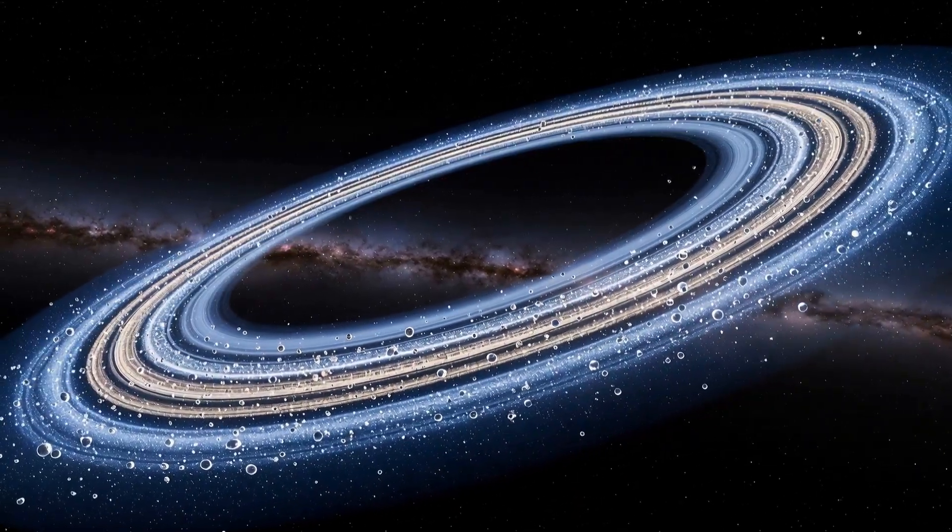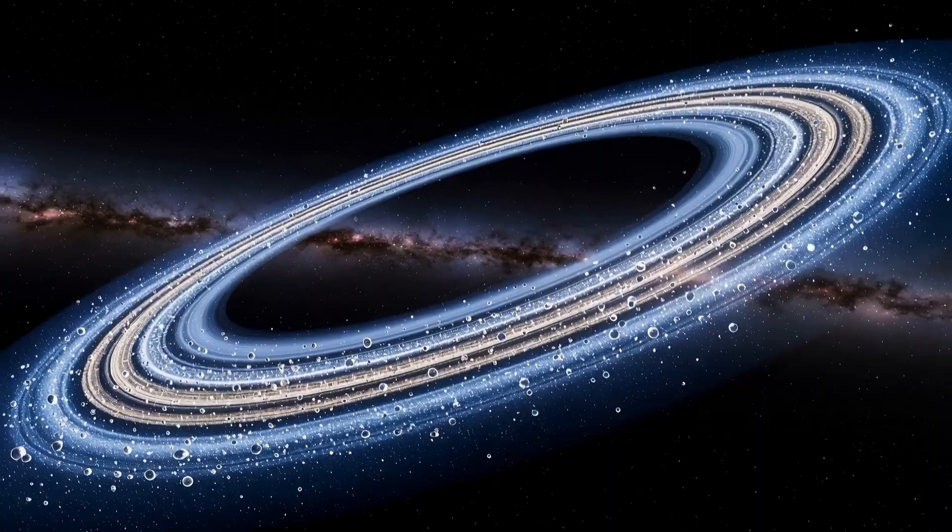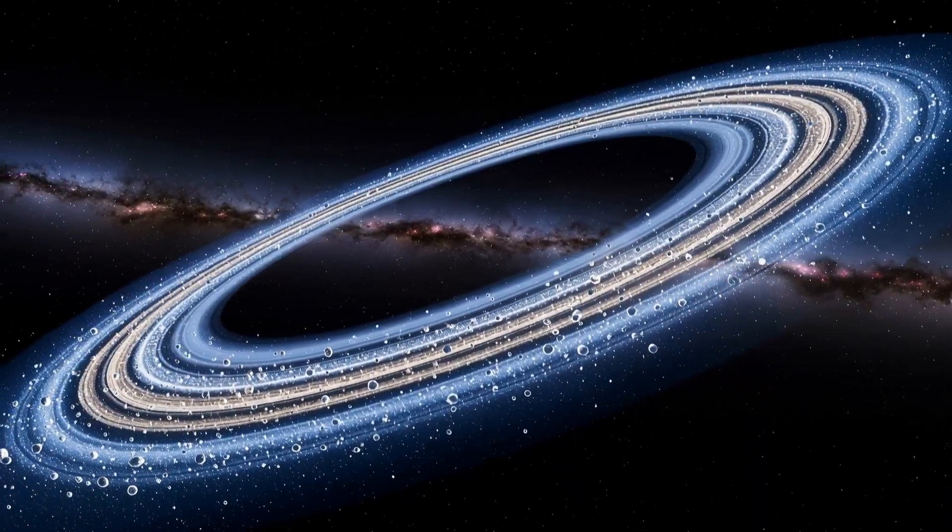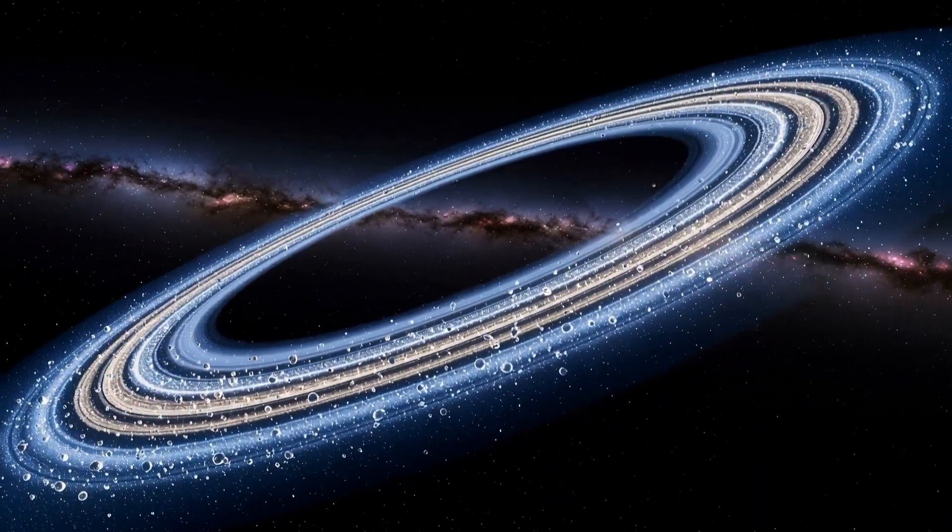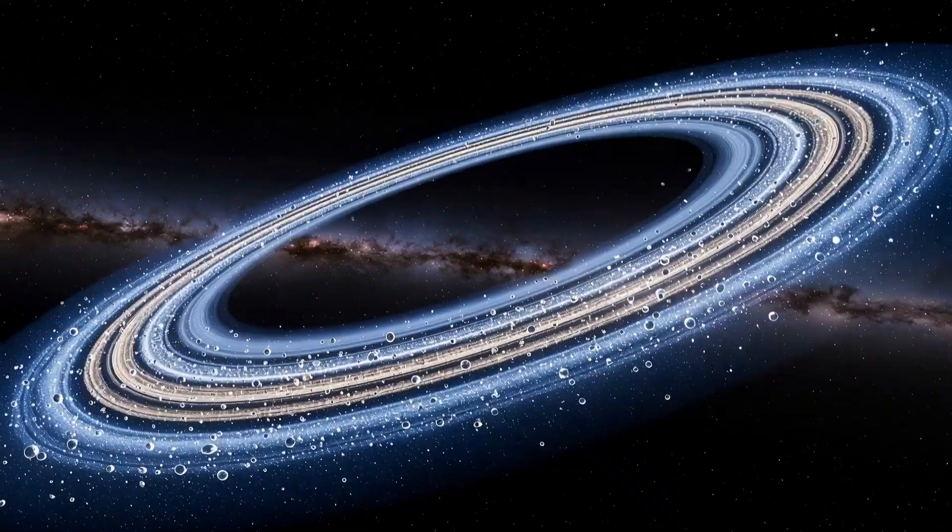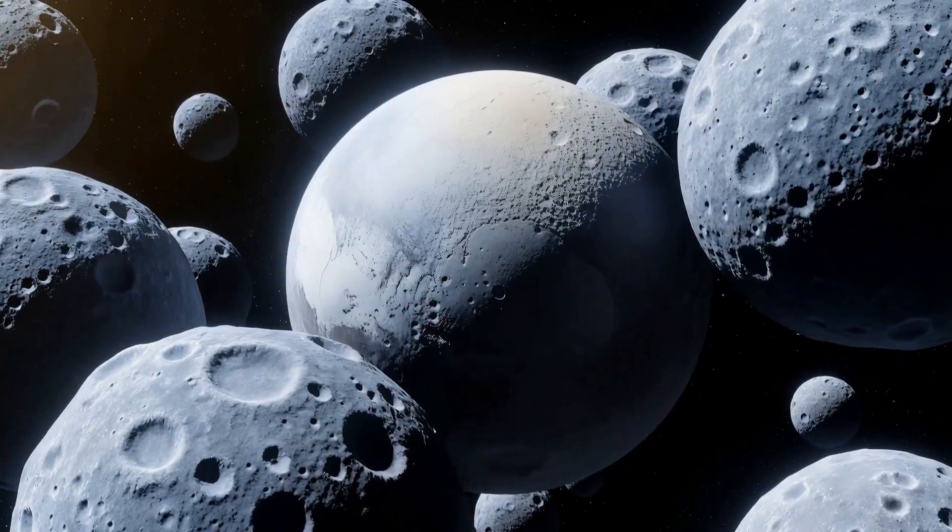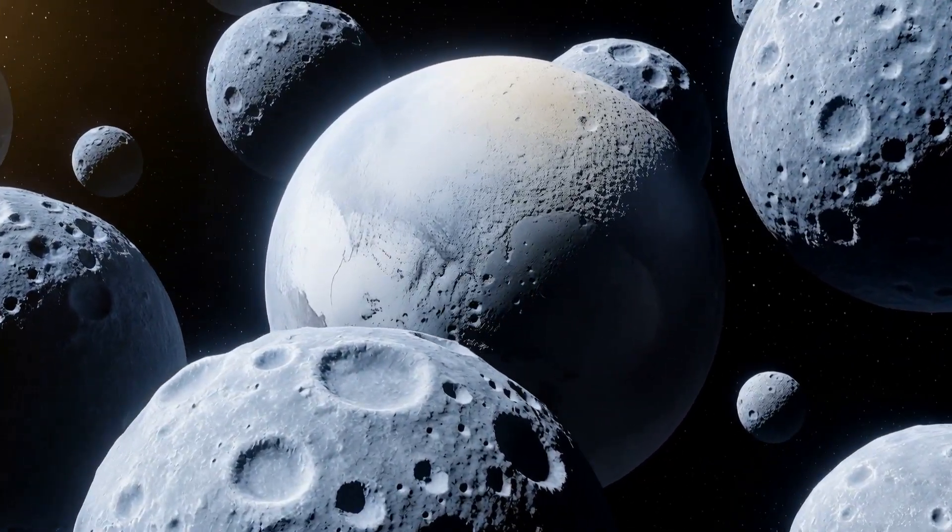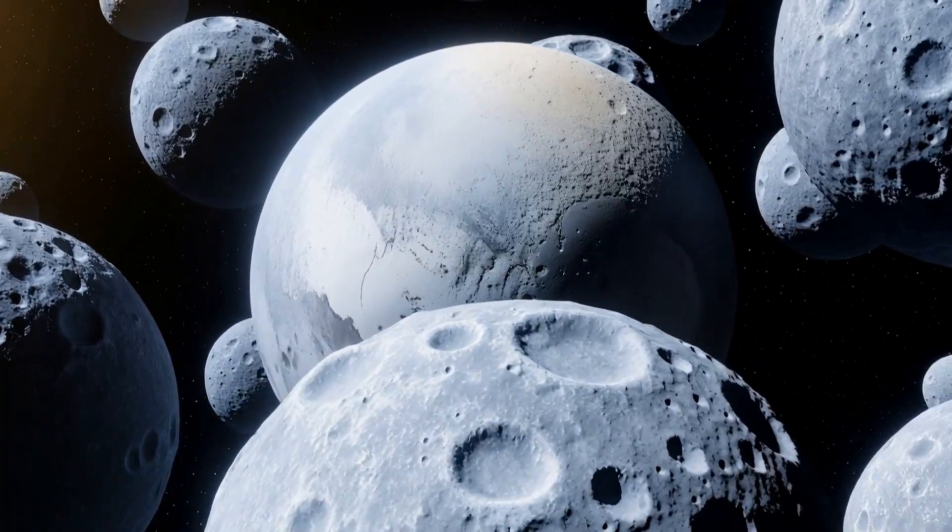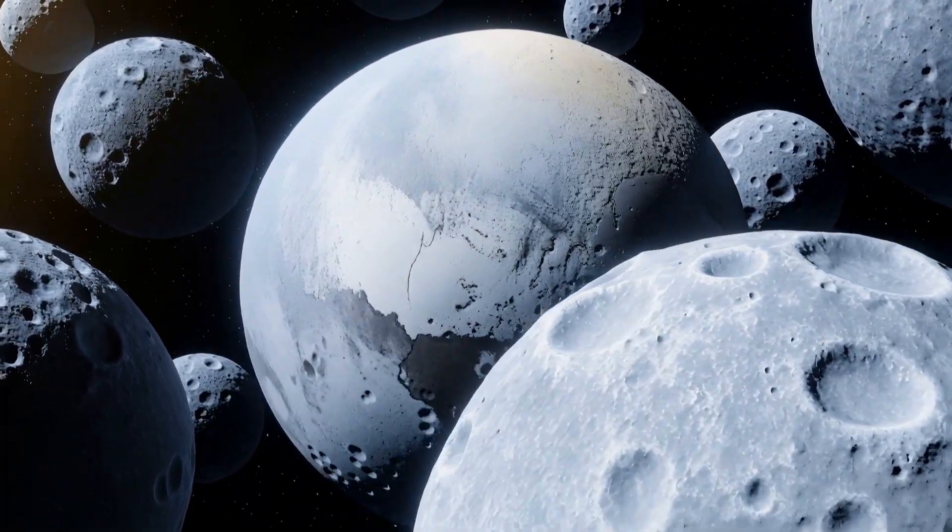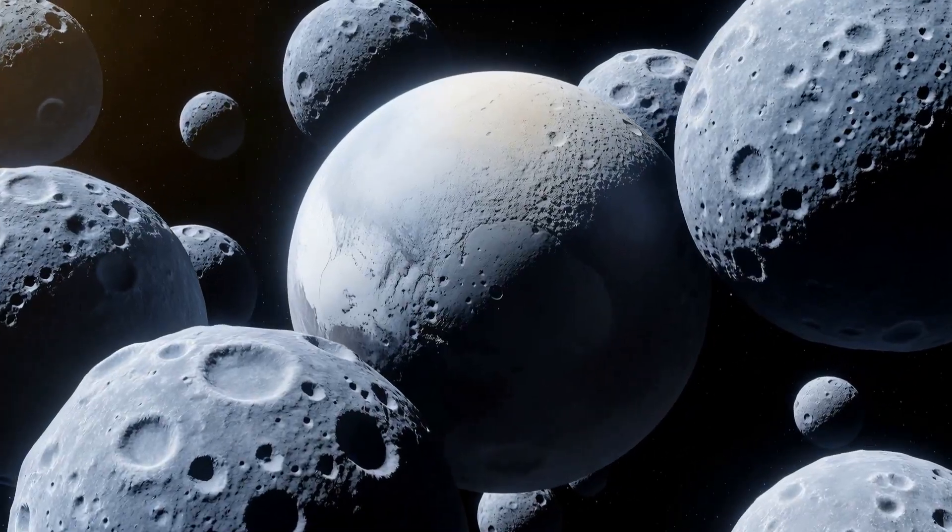Think of it as a colossal cosmic junkyard, a donut-shaped ring of icy bodies stretching from Neptune's orbit out to about 50 times the distance from the Earth to the Sun. This is the Kuiper Belt, filled with thousands, if not millions, of frozen relics, ancient building blocks that never quite came together to form a planet.